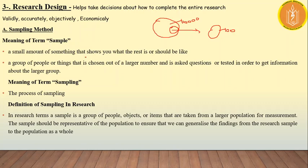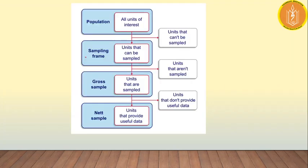Sampling is the process of deriving a sample from a complete population. This is a flow diagram: there is a population consisting of all units of our interest. For example, a classroom where all students we are interested in are present.